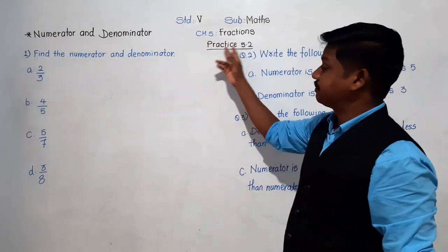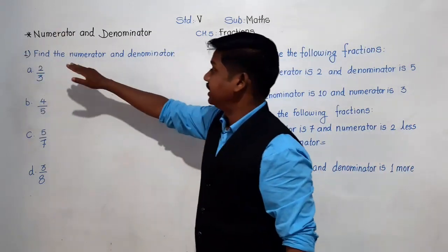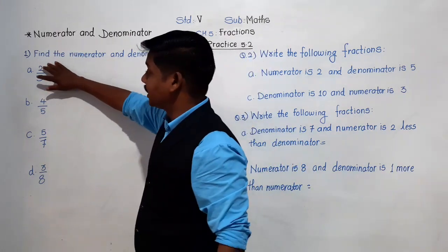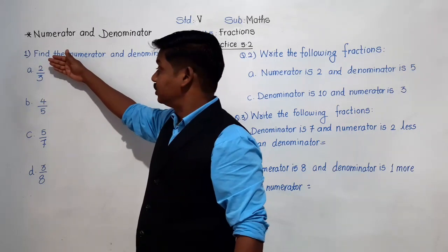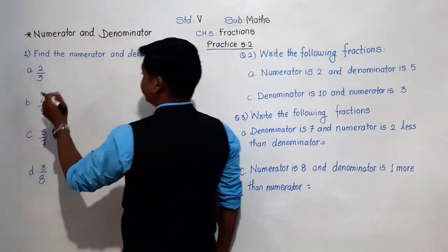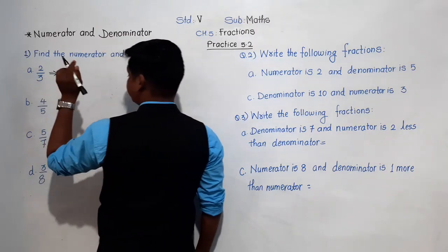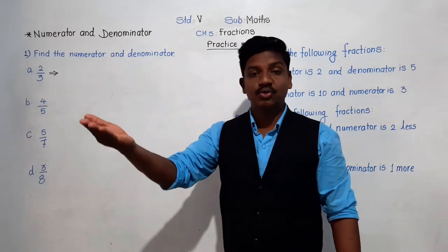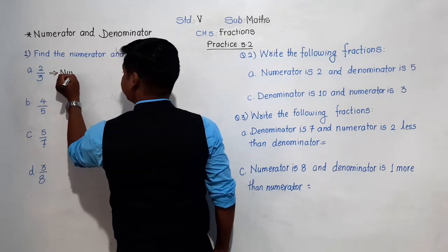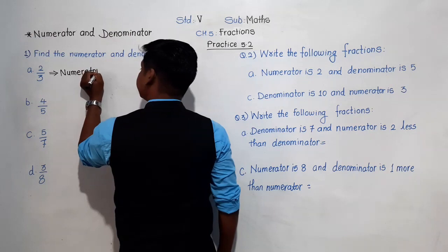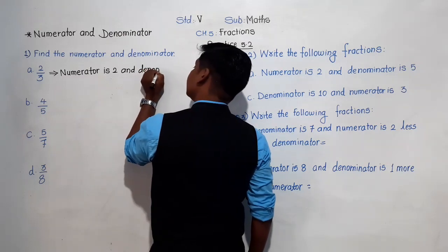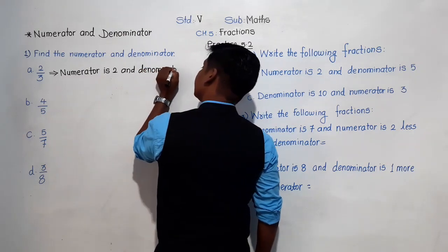Now we will see the first question in Practice 5.2. The first question is: find the numerator and denominator in the following fractions. The fraction given is 2 by 3, or 2 upon 3, or 2 divided by 3. The numerator means the number above the bar, so numerator is 2. And the denominator is the number below the bar, so denominator is 3.